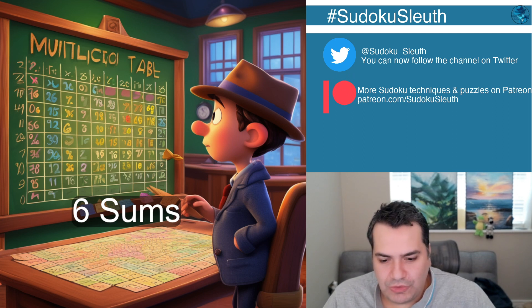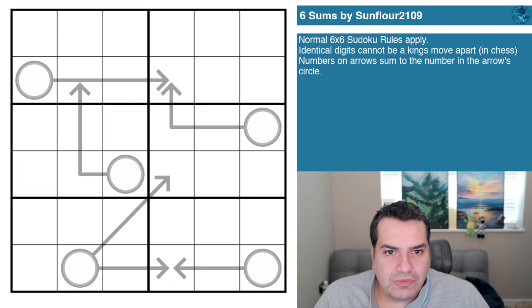Well let's take a look at what the actual puzzle is. Now we've got 6 sums by sunflower2109. Somehow sunflower was born in the future? Very interesting.